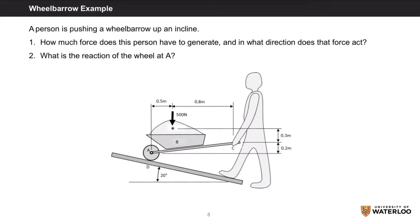The second problem for this week is on a wheelbarrow. A person is pushing a wheelbarrow up an incline, as you can see in the figure below. Here there are two questions that we'll be answering. How much force does this person have to generate, and in what direction does that force act? And what is the reaction of the wheel at A?